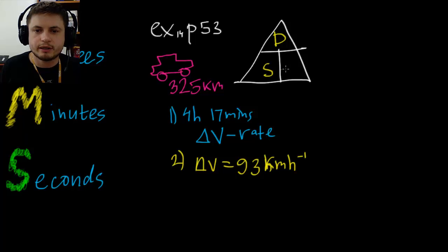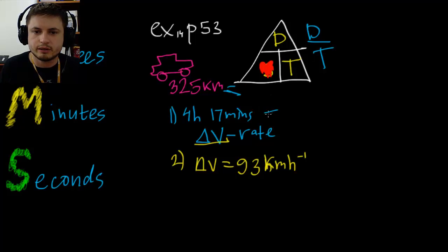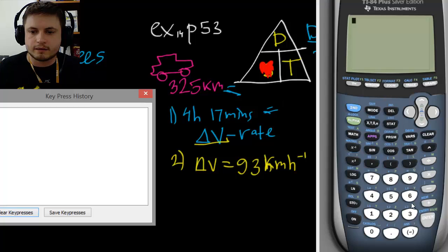So on top we have our distance, then we have our speed right here and time right here. What we're looking for is delta V rate, that's speed. So we cover the speed with paintbrush. So we're looking for distance over time. Distance is right here, time is right here. Let's go to our calculator.